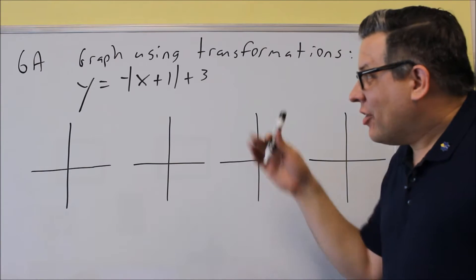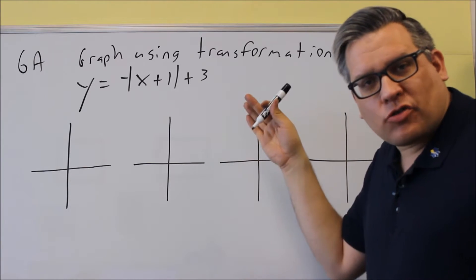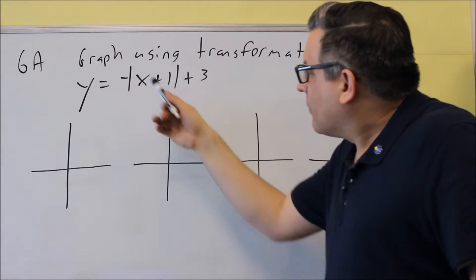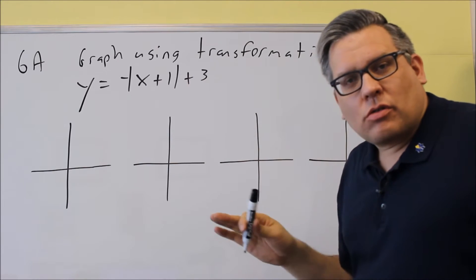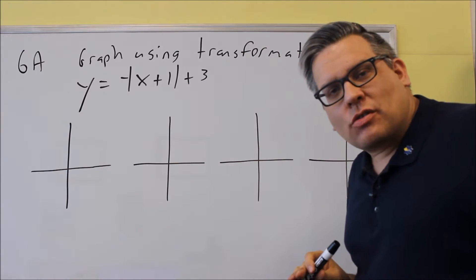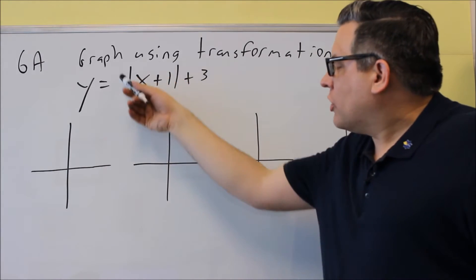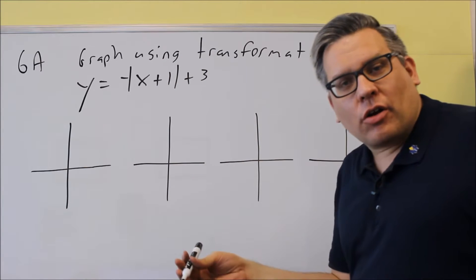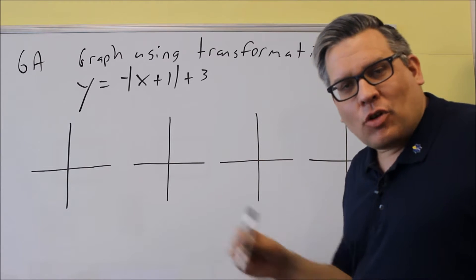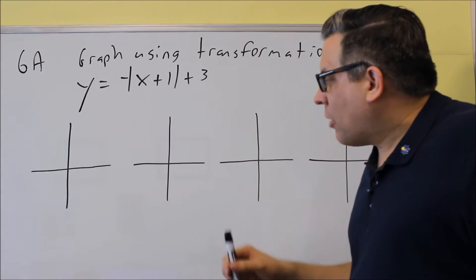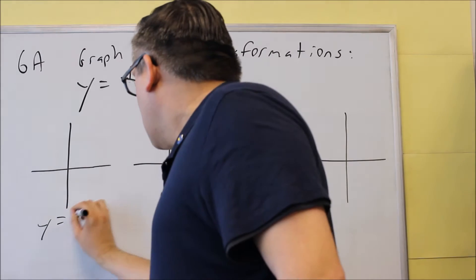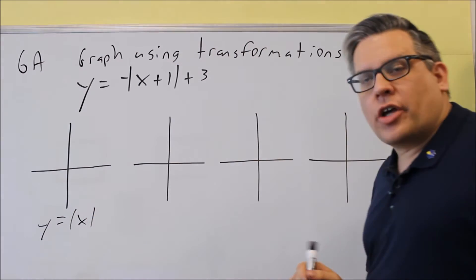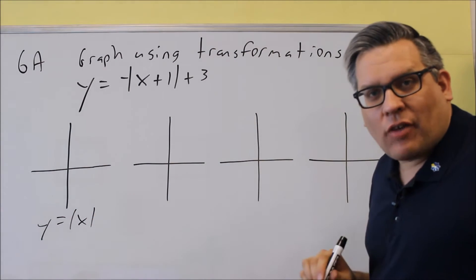In the notes for this section where this problem comes from, I talk about the different library of functions that work for each one. First, what you have to do is look at the equation, and then from there you can decide which base graph to use. Now the one I'm going to use is absolute value. That's the one that goes with this because that's what I have, I have absolute value.